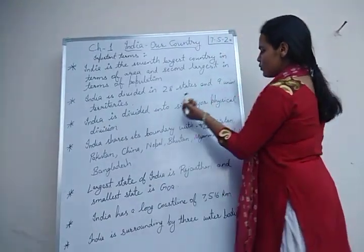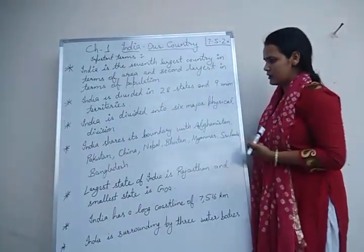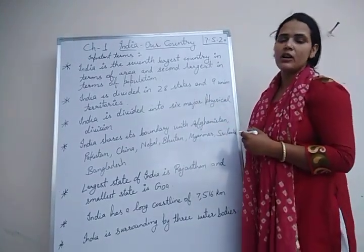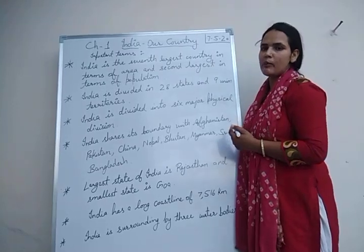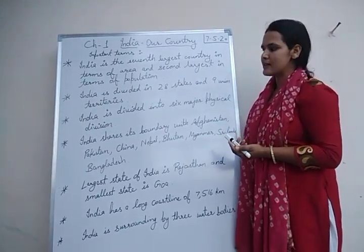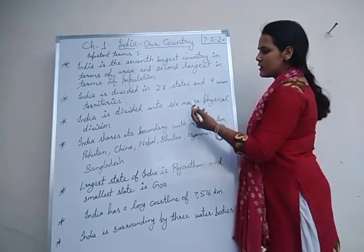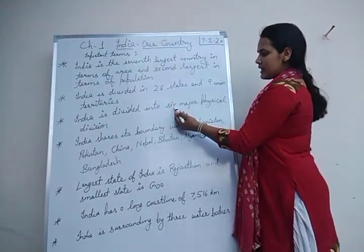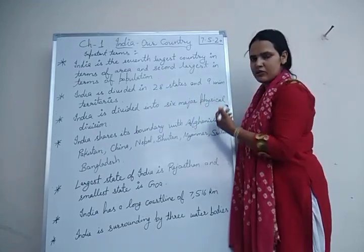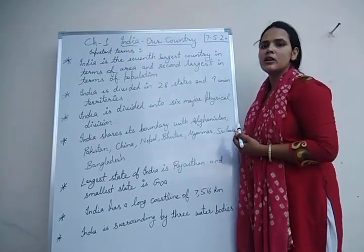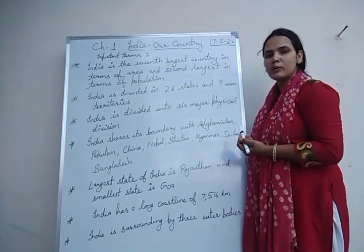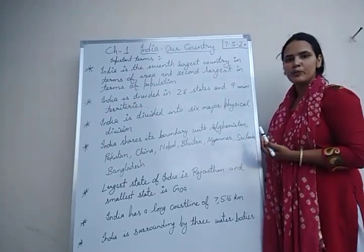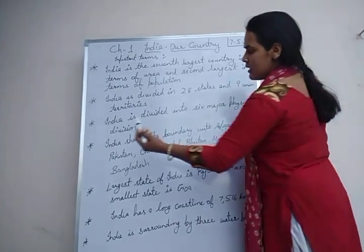India is divided into 6 major physical divisions: the northern mountains, northern plains, the great Indian desert (Thar desert), the southern plateau, the coastal plains, and the islands. These physical divisions make our country beautiful and attract tourists from all around the world.